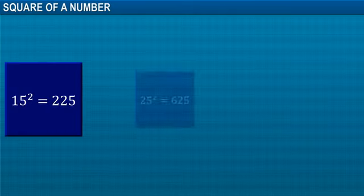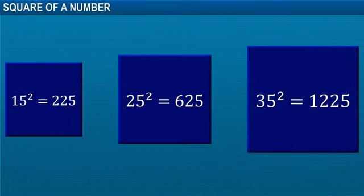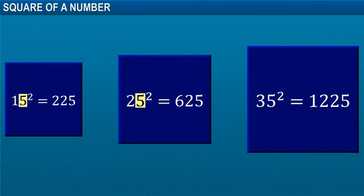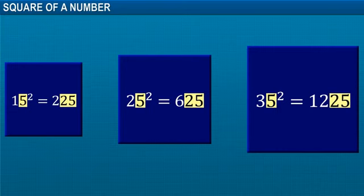Now, consider these numbers and their squares. On observing carefully, a pattern is seen. The last digit of all these numbers is 5 and the last two digits of their squares is 25.